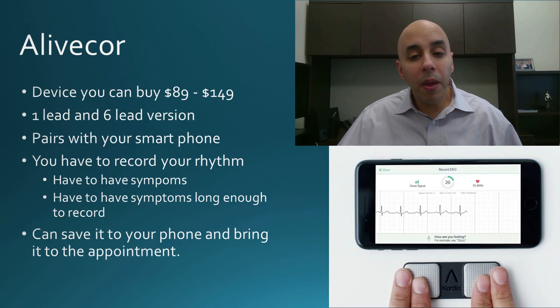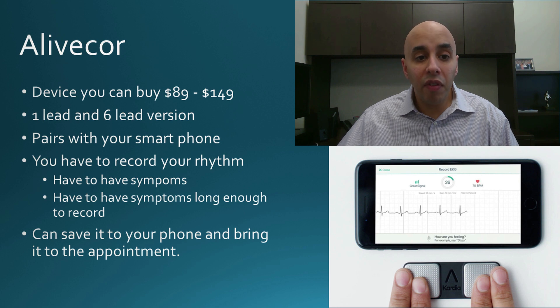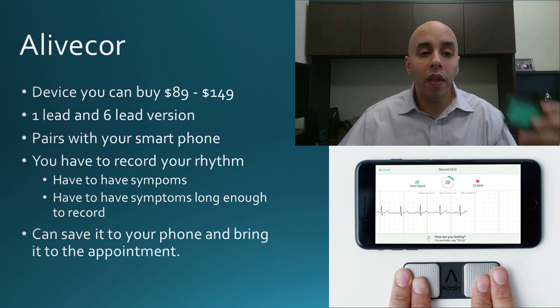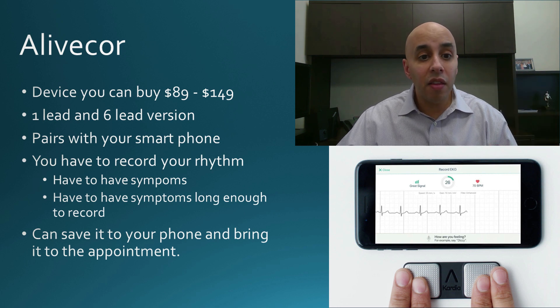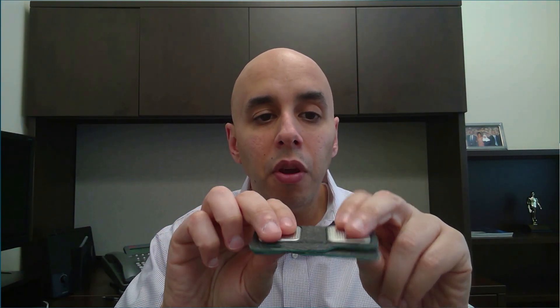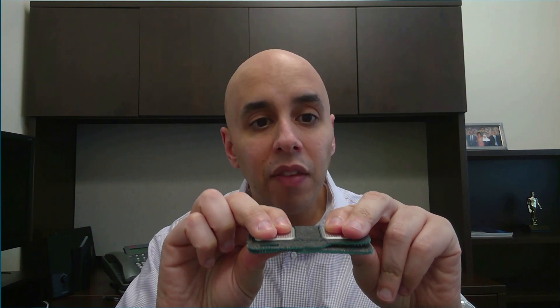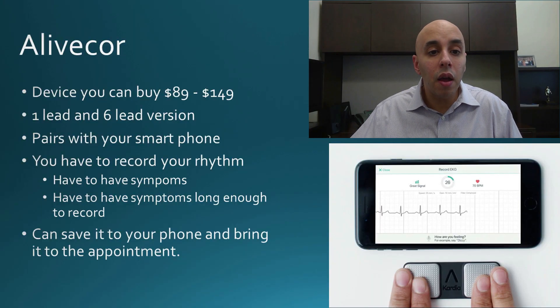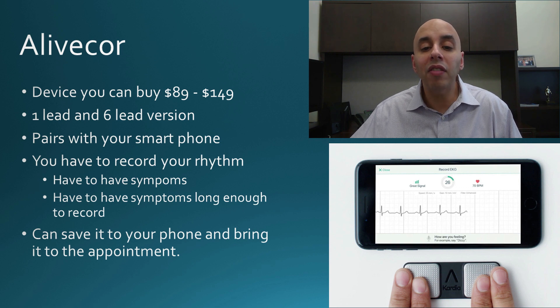For some people, what I recommend is what's called the AliveCor. If someone is symptomatic, they can measure their EKG themselves. This company sells a little product that pairs with your smartphone — you put your two fingers on it, it connects to your smartphone, and it can record the EKG, which you can then look at with your doctor. They recently came out with a newer version that has six different leads, and the quality is actually excellent.